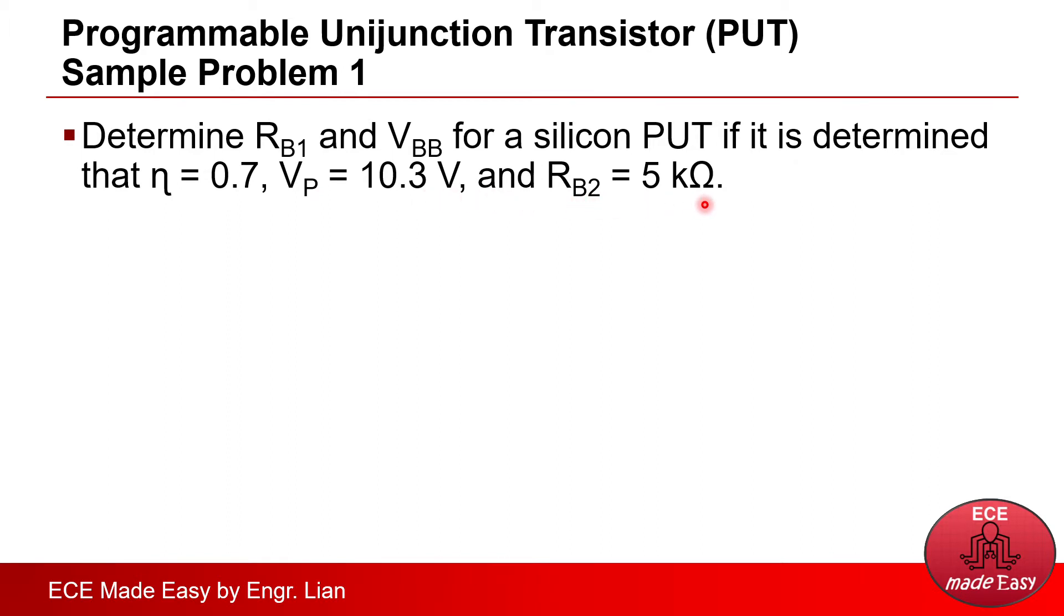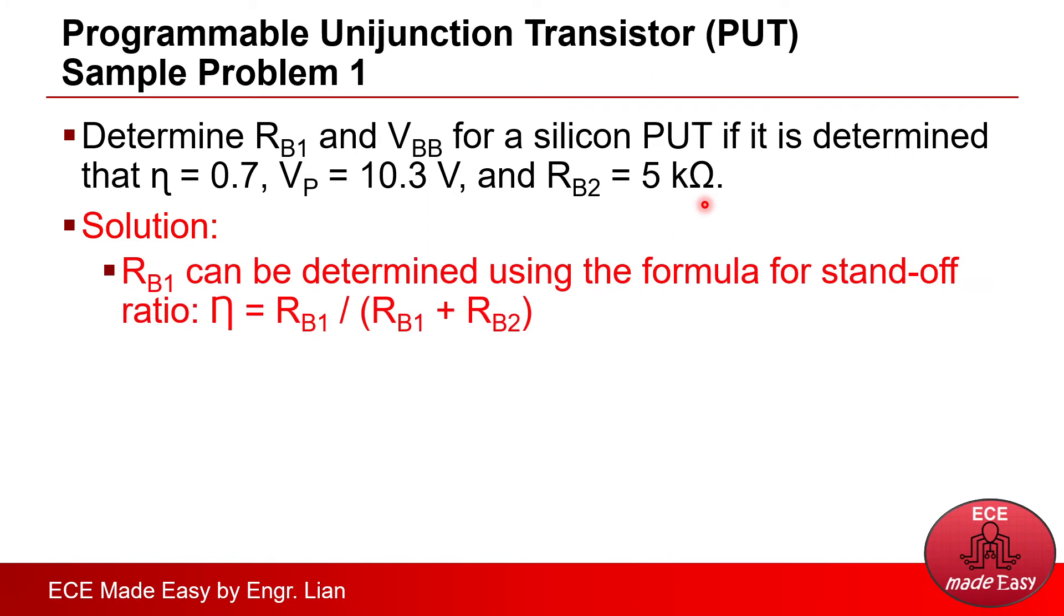So to solve, let's recall the formula that can be used to determine RB1, which is the standoff ratio. RB1 can be determined using the formula for standoff ratio, which is eta equals RB1 over RB1 plus RB2.